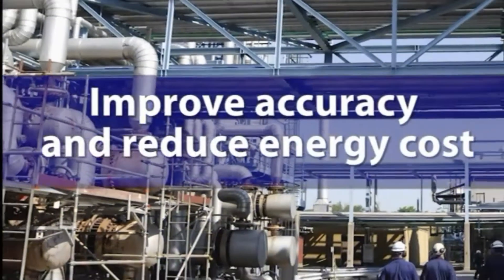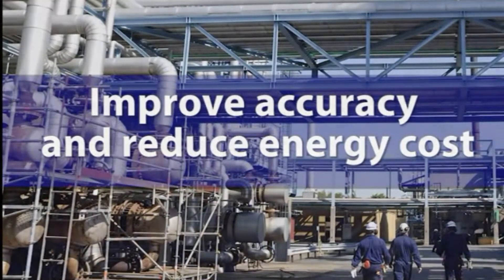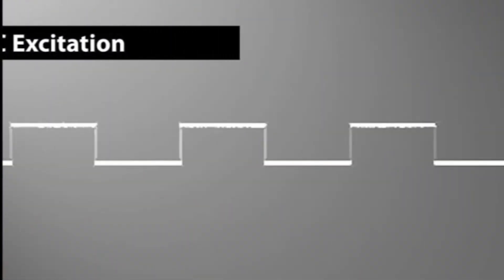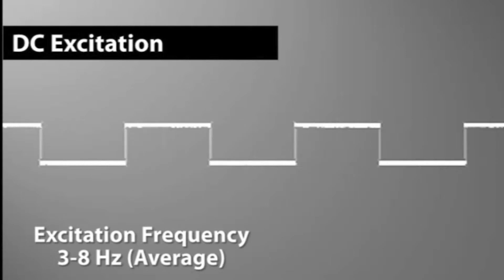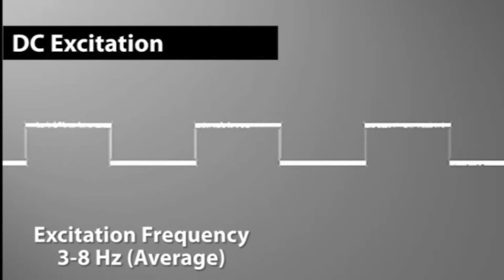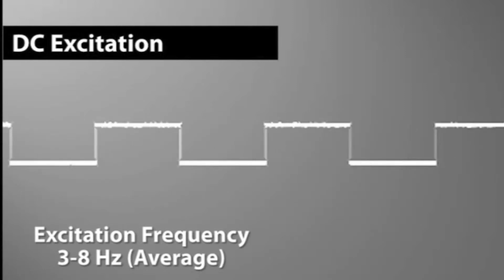In an effort to improve accuracy and reduce energy cost, pulsed DC-type excitation was introduced several years later. The average excitation frequency is between 3 to 8 hertz, but can go as high as 30 hertz.